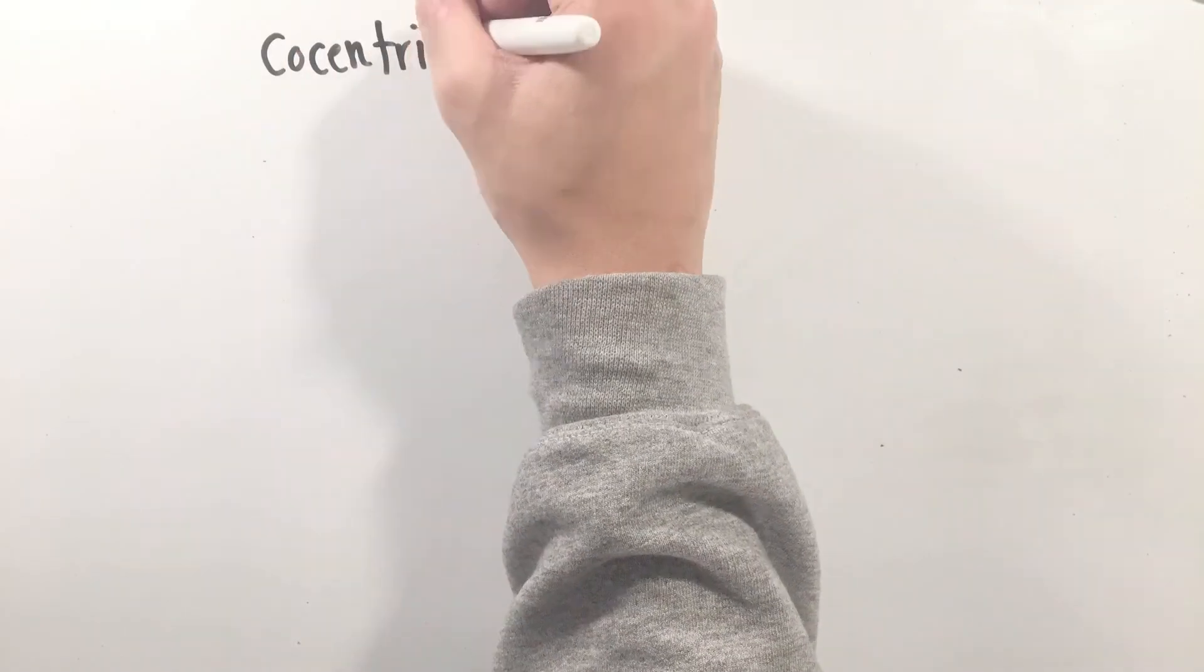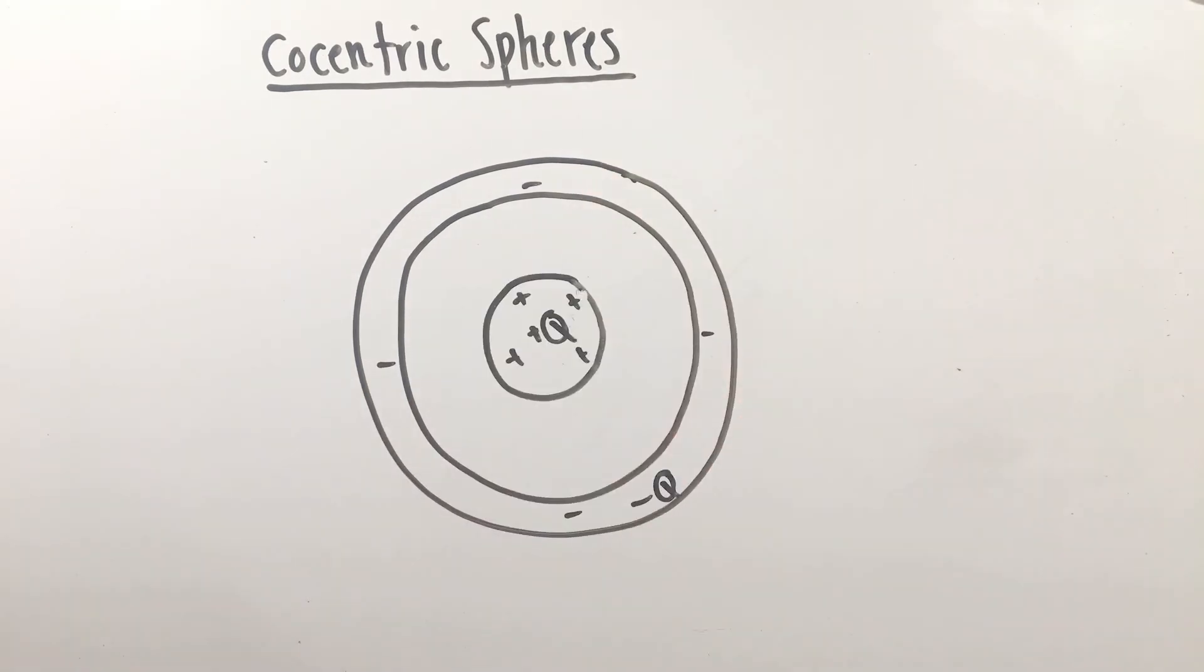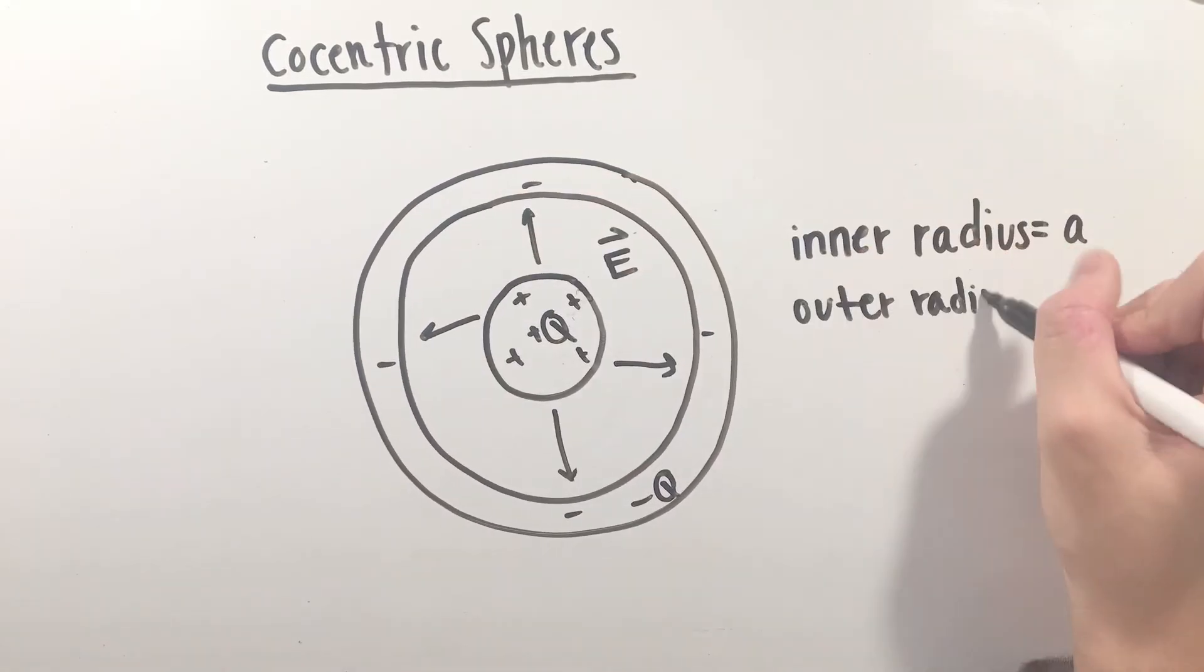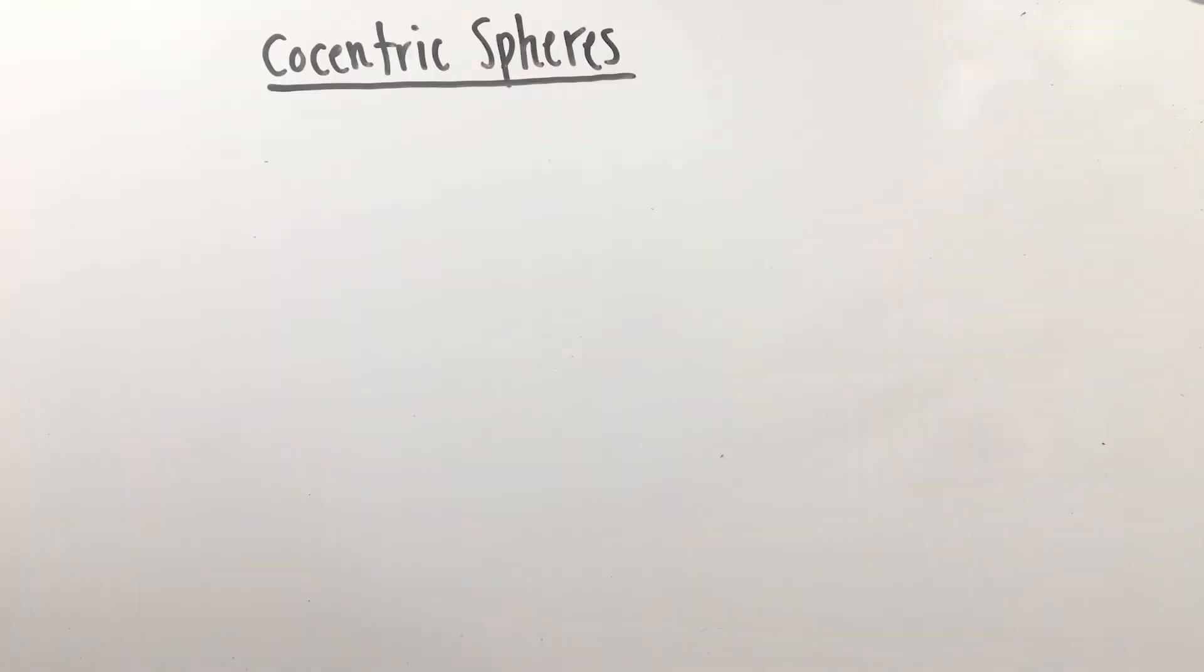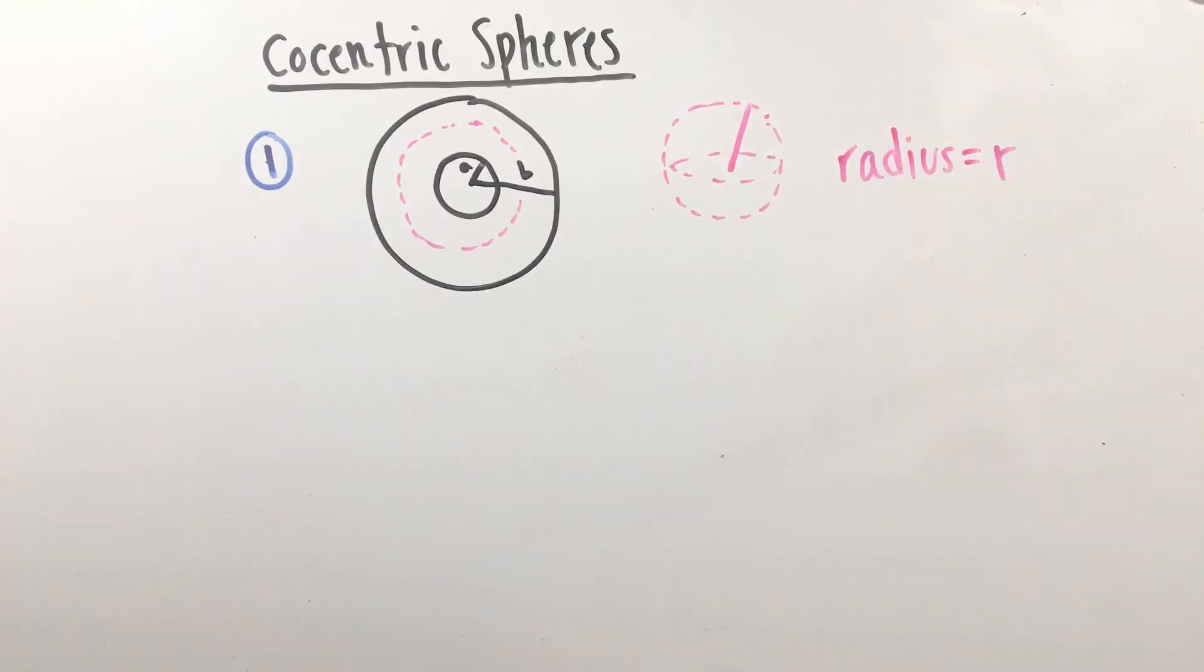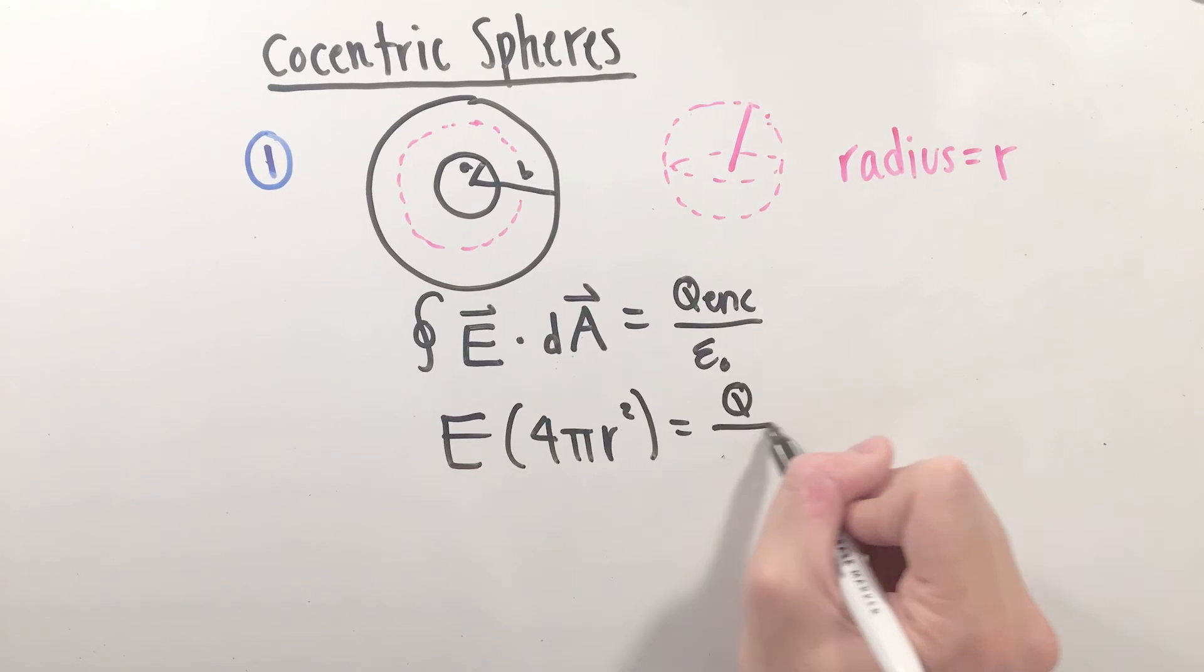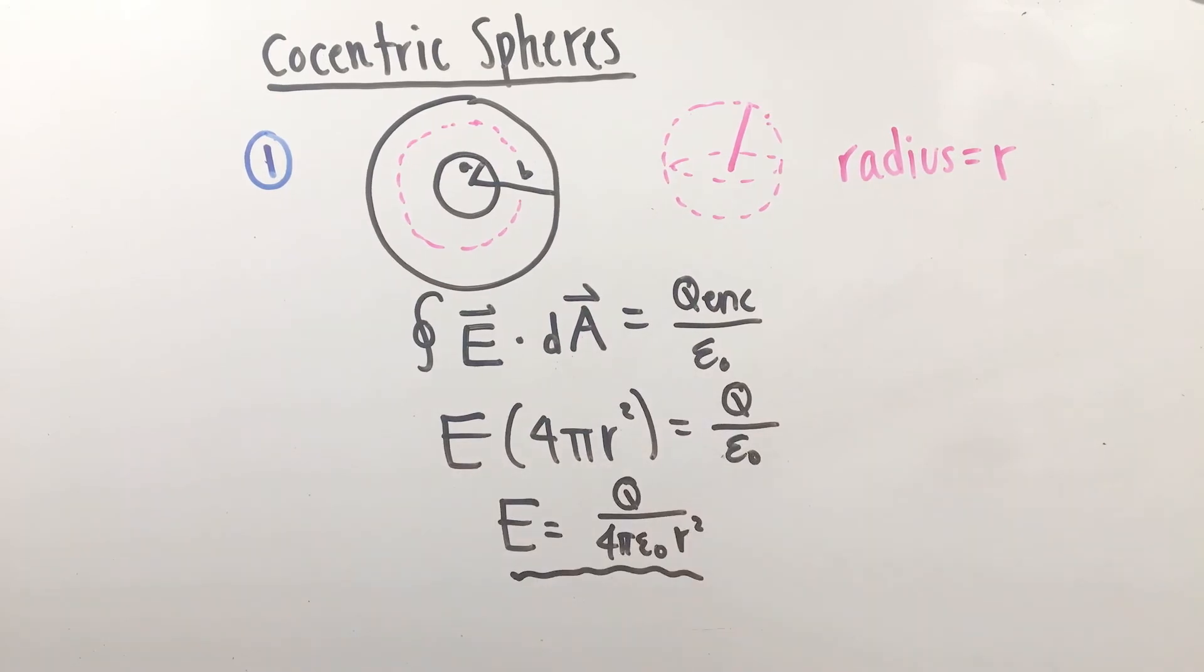One final configuration we need to take a look at is co-centric spherical capacitors, with inner and outer radii we'll once again call A and B, respectively, and charges positive and negative Q. The process here is exactly the same as the past two. Step one, find the electric field between the spheres using Gauss's law. Taking our Gaussian surface as a sphere of some radius R, the equation for the electric field is not hard to find.